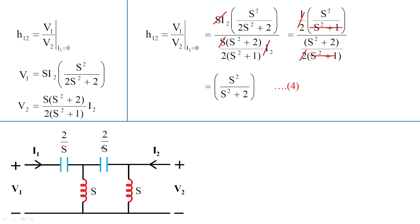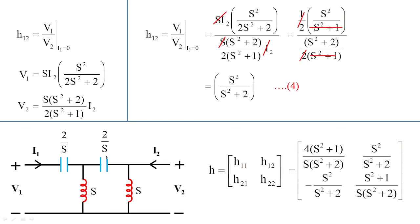Finally, for this circuit the complete h parameters are: h11 = 4(s² + 1) / [s(s² + 2)], h12 = s² / (s² + 2), h21 = −s² / (s² + 2), and h22 = (s² + 1) / [s(s² + 2)]. This is how we obtain h parameters for circuits with different passive elements.